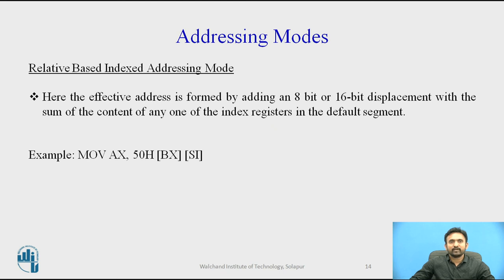Now moving to relative based indexed addressing mode. These addressing modes are a slight modification of the base indexed addressing modes with the addition of an 8-bit or 16-bit constant. The effective address is formed by adding an 8-bit or 16-bit displacement to the sum of the content of any one of the index registers in the default segment. For example: MOV AX, [50H + BX + SI] — that is, displacement plus base plus source index register.